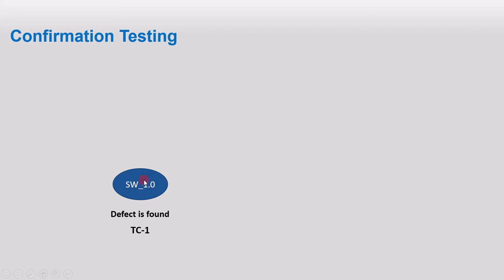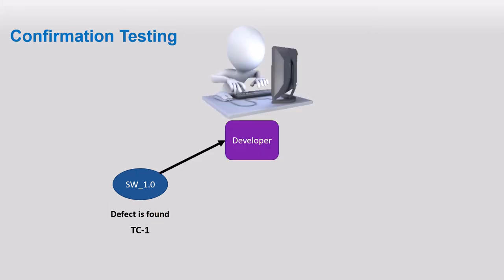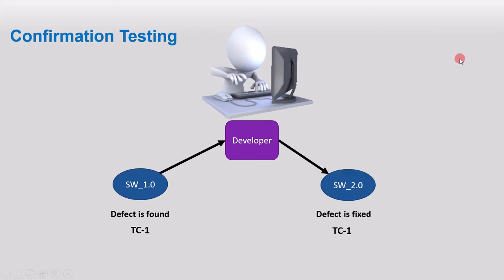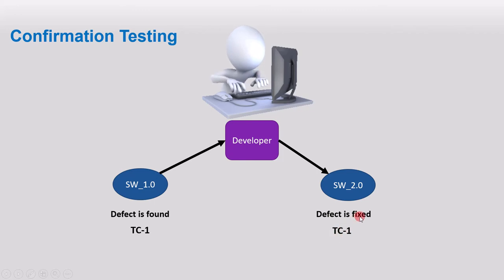Suppose you have a software with version 1.0 and while testing the software, test case one was executed and we found a defect. This software will be sent to the developer so that the developer can fix it. Once the defect is fixed, a new version of the software is ready, referred to as software version 2.0 where the defect is fixed. We must run the test case once again to confirm the defect is fixed. This is why this is called confirmation testing — we use the same test case to confirm if the defect found is fixed or not.